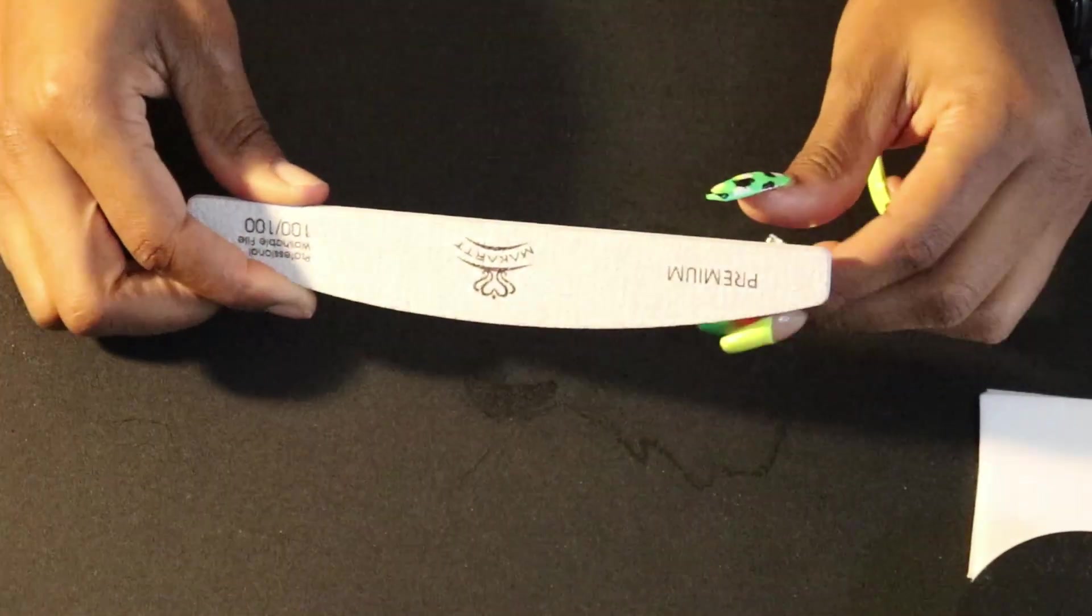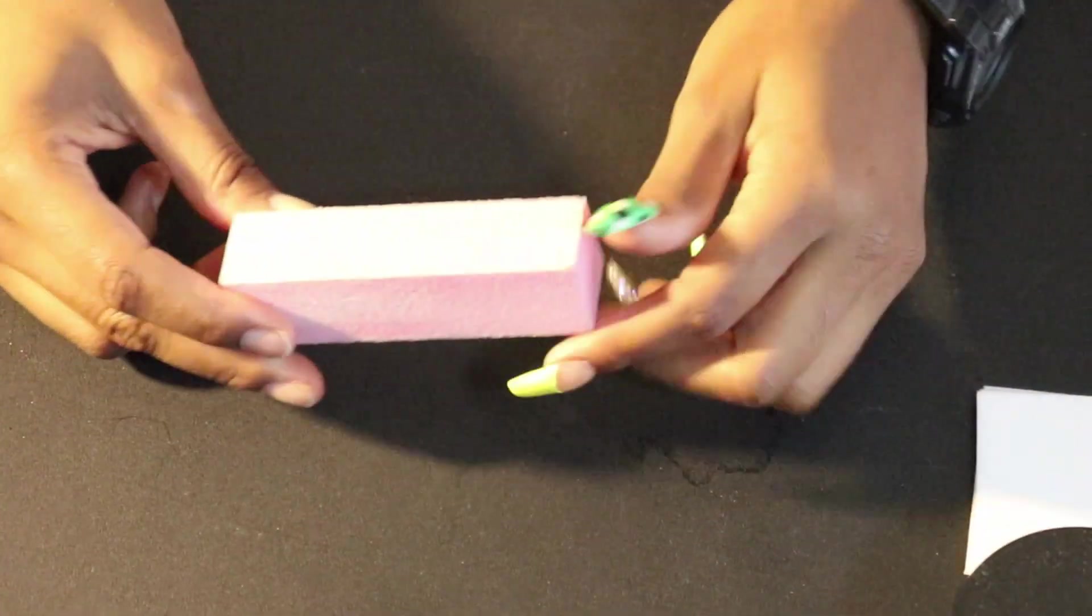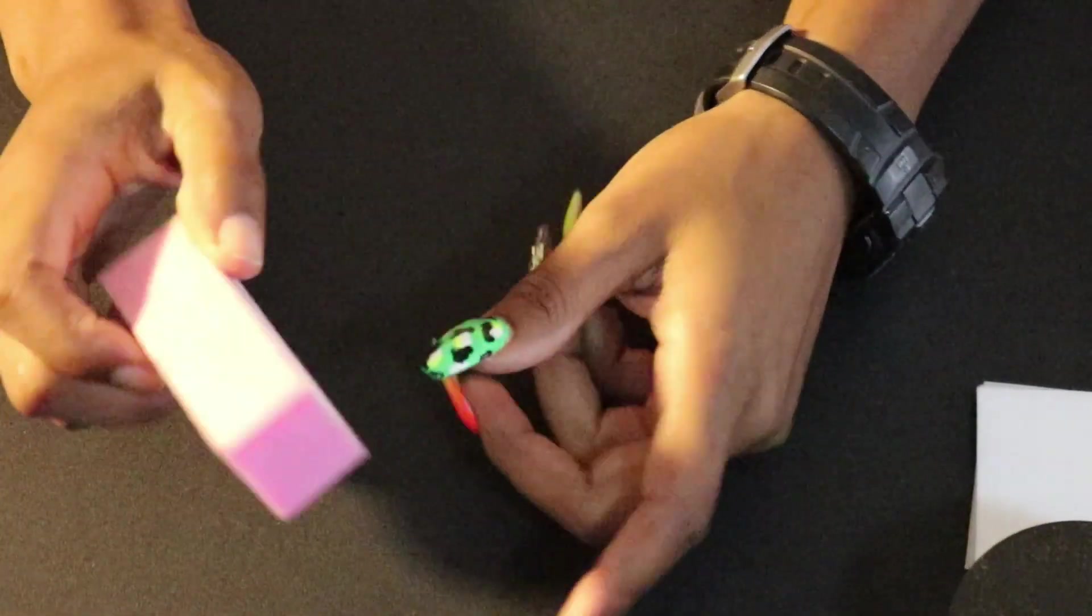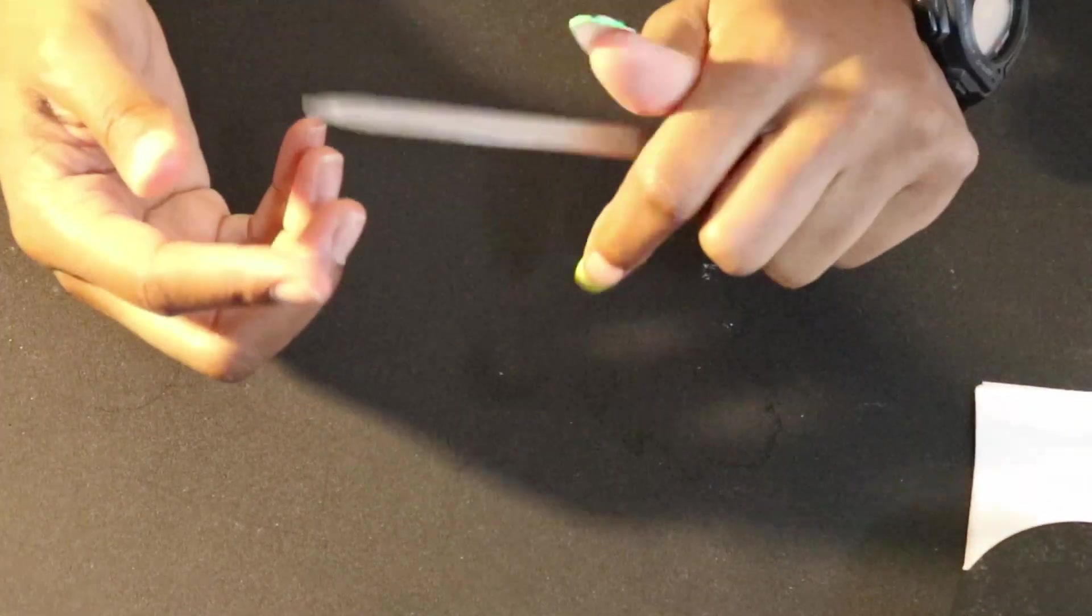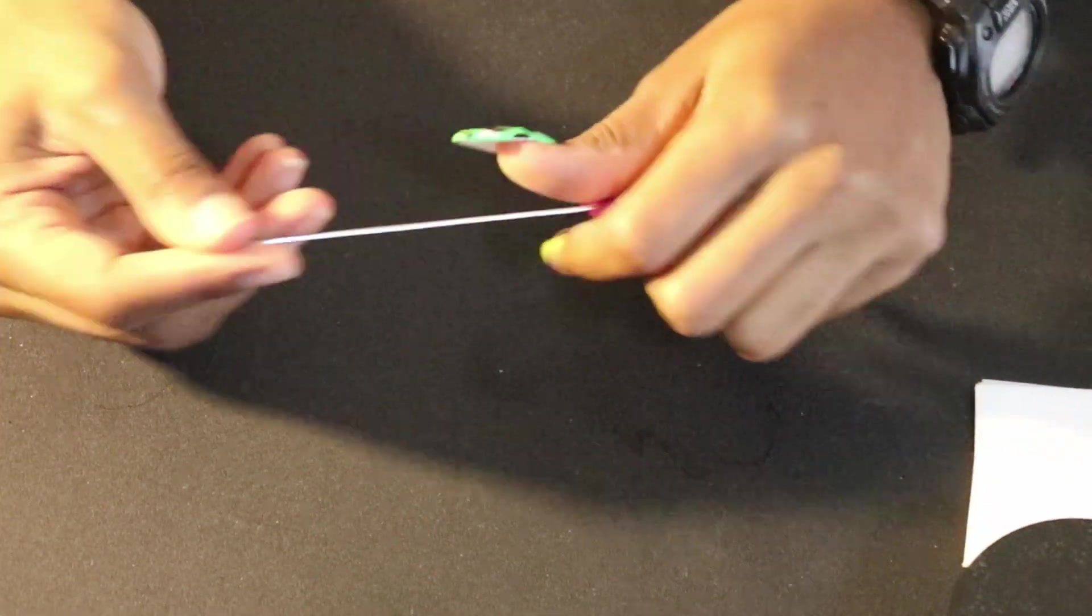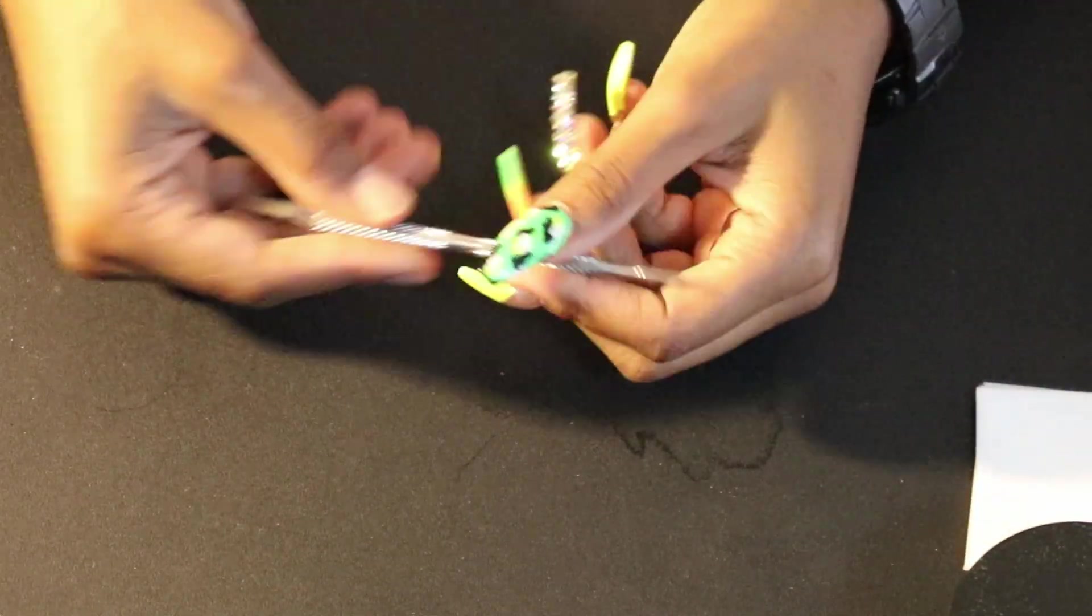First, we're going to need a file—this is 100 grit because we're going to be doing a lot of filing. After that, I'm going to use a buffing block as well. The buffing block is great for smoothing out the nails so no ridges show through. I'm also going to use this metal nail file to clean underneath my nails, as well as a cuticle pusher to push back the cuticles.